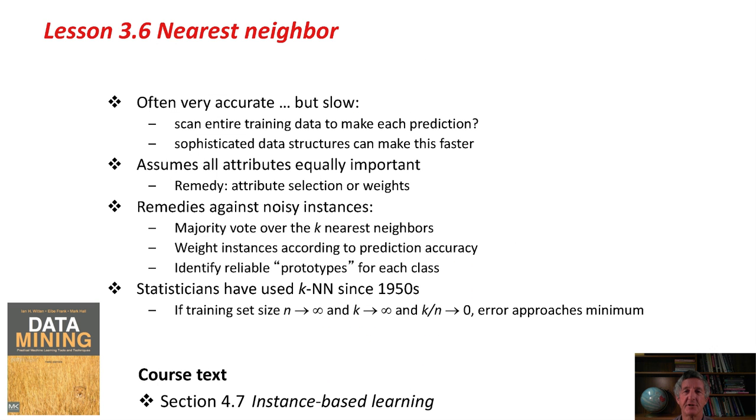The nearest neighbor is a really good method. It's often very accurate. It can be slow, and simple implementation would involve scanning the entire training data set to make each prediction, because we've got to calculate the distance of the unknown test instance from all of the training instances to see which is the closest. But there are more sophisticated data structures that can make this faster. It assumes all attributes are equally important. If that wasn't the case, you might want to look at schemes for selecting attributes or weighting attributes, depending on their importance.